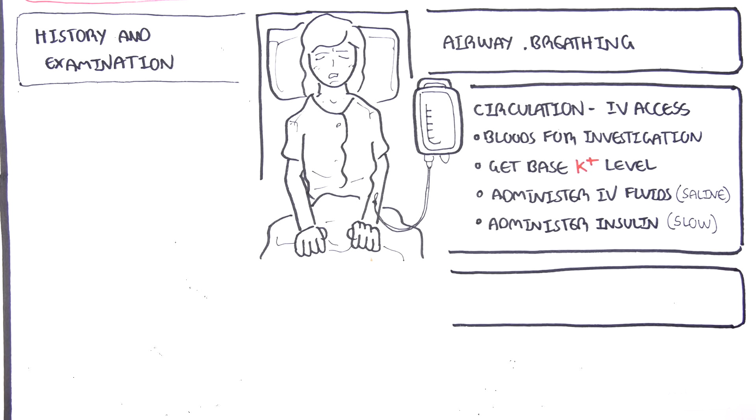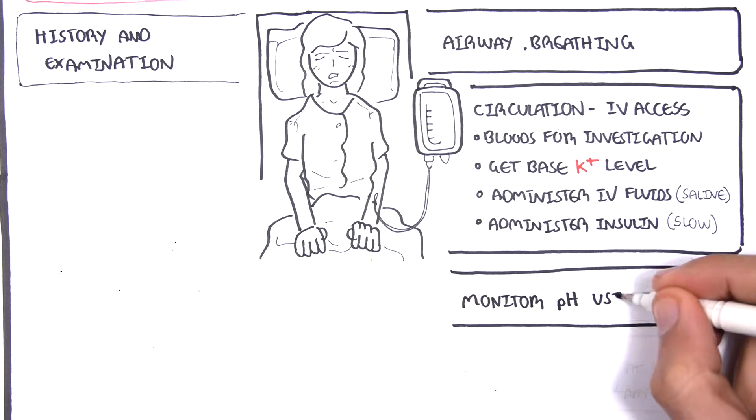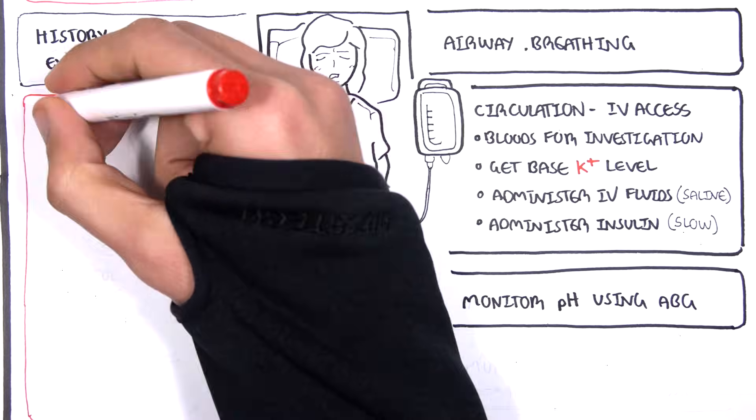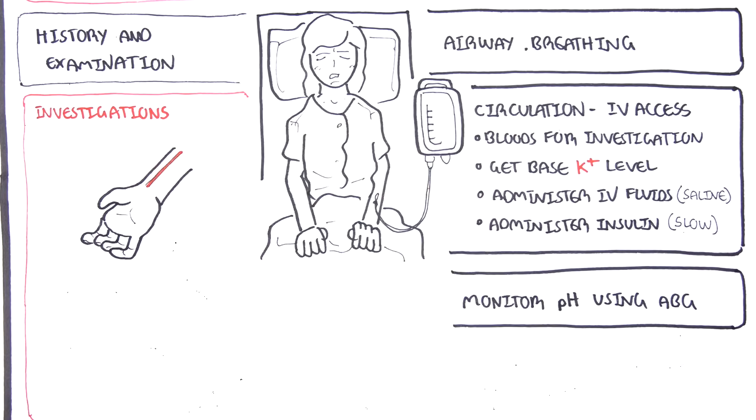While this is going on, investigations have to be performed. So ABG, which is arterial blood gas, is very important to measure the pH in the blood. And this needs to be done regularly.